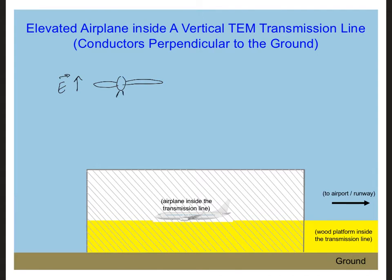So instead, what we need to do is rotate either the transmission line — so we have the two plates of the transmission line above and below it — or rotate the airplane in our measurement setup. Now, considering gravity, we can imagine it's easiest to keep our airplane horizontal to the ground. So keeping the airplane horizontal, what we can do is rotate our transmission line, which is shown here.